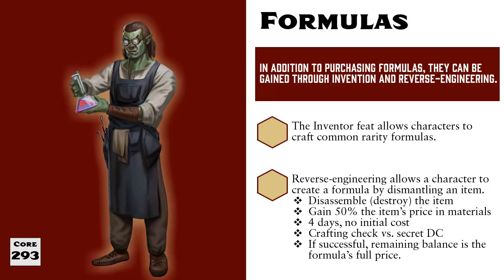First you spend 4 days disassembling and examining that item. This effectively destroys it, and leaves you with raw materials worth 50% of the item's listed price. After this, you make a crafting skill check versus a DC set by the GM, and this DC should be the same DC that you would roll against to craft that item. If you succeed, you can craft the item's formula at the formula's full price — not half its price, as is normal with crafting — because at this point you have not invested any money towards the project yet. The 50% value that you gain from disassembling the item, that is money in your pocket at this point.